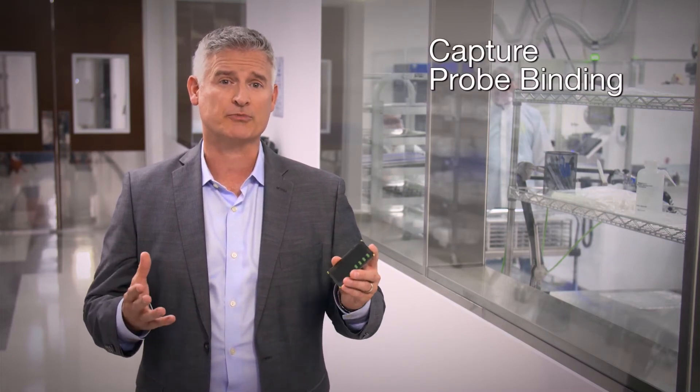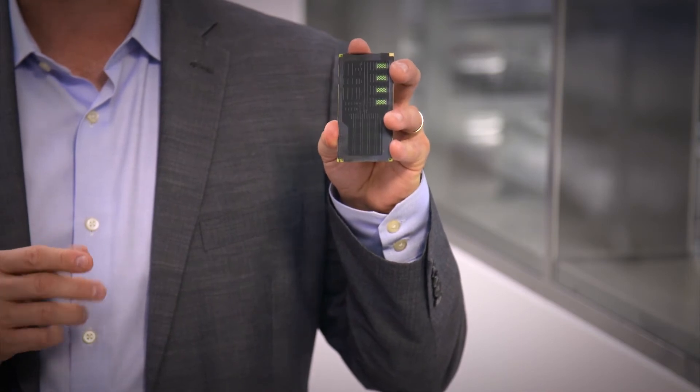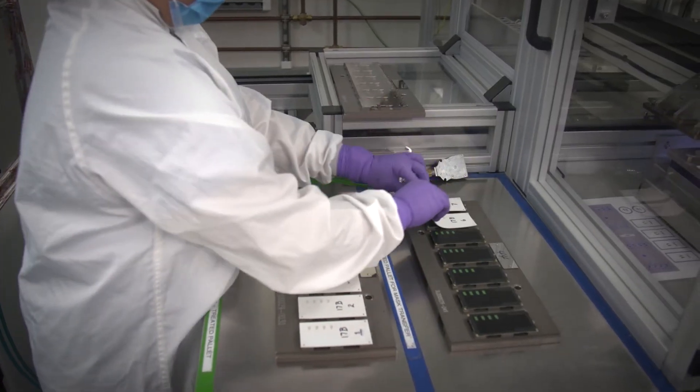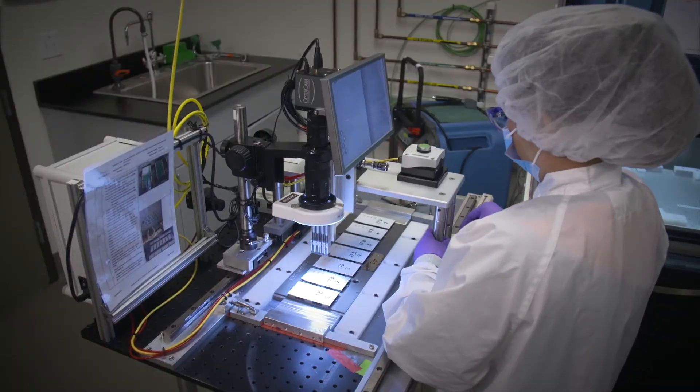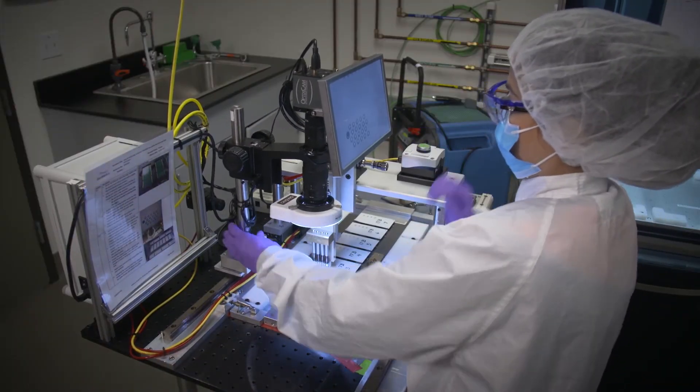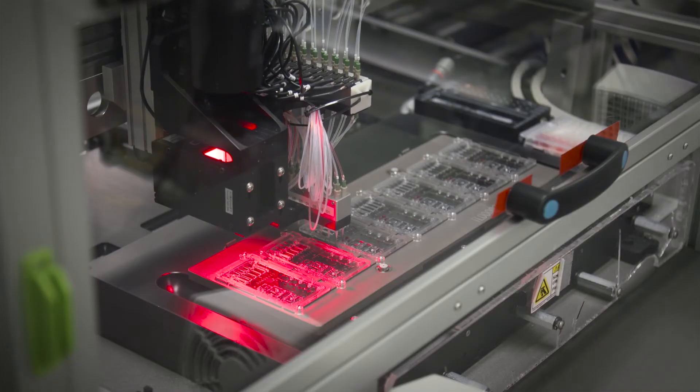In this part of our manufacturing process, we enable eSensor detection by binding capture probes to specific electrodes on the printed circuit boards. Here you see the PCBs being treated by specialized equipment as part of that process.